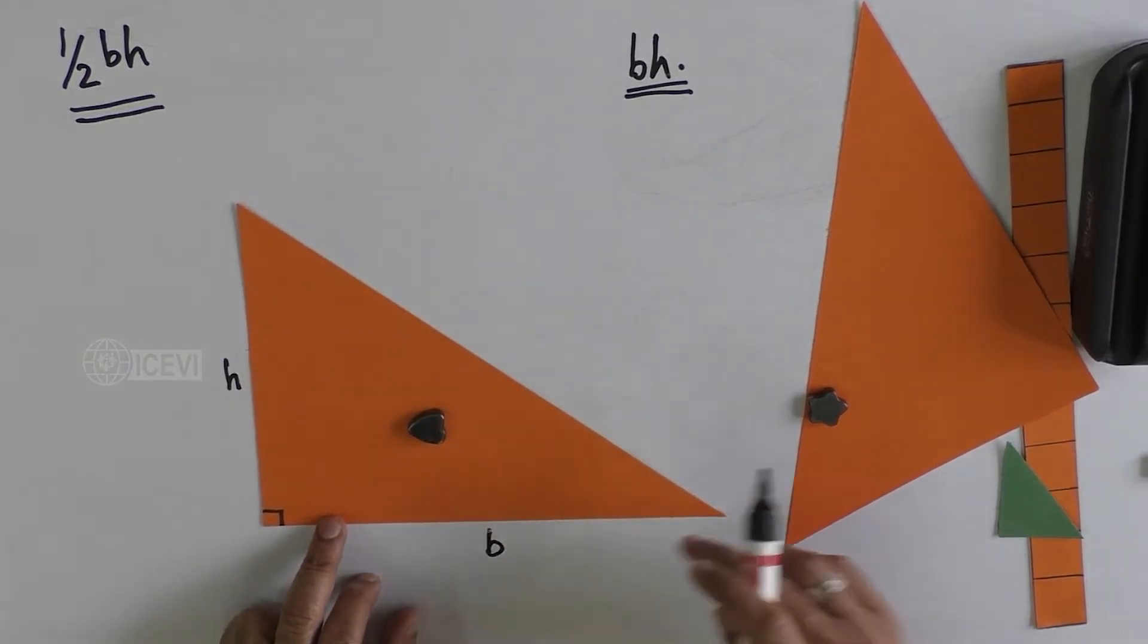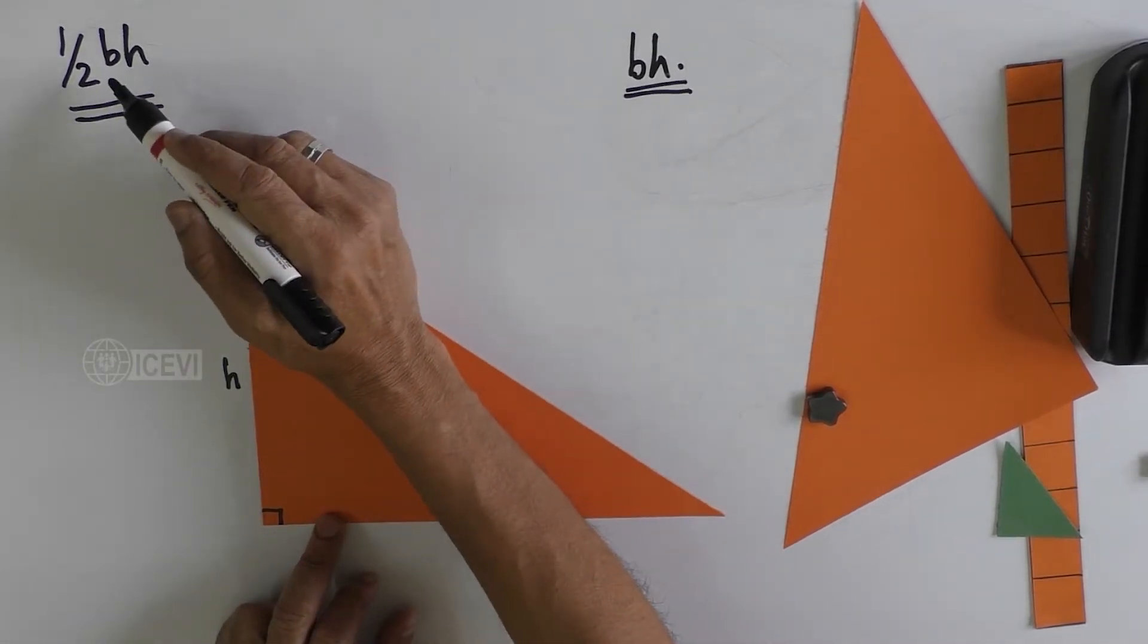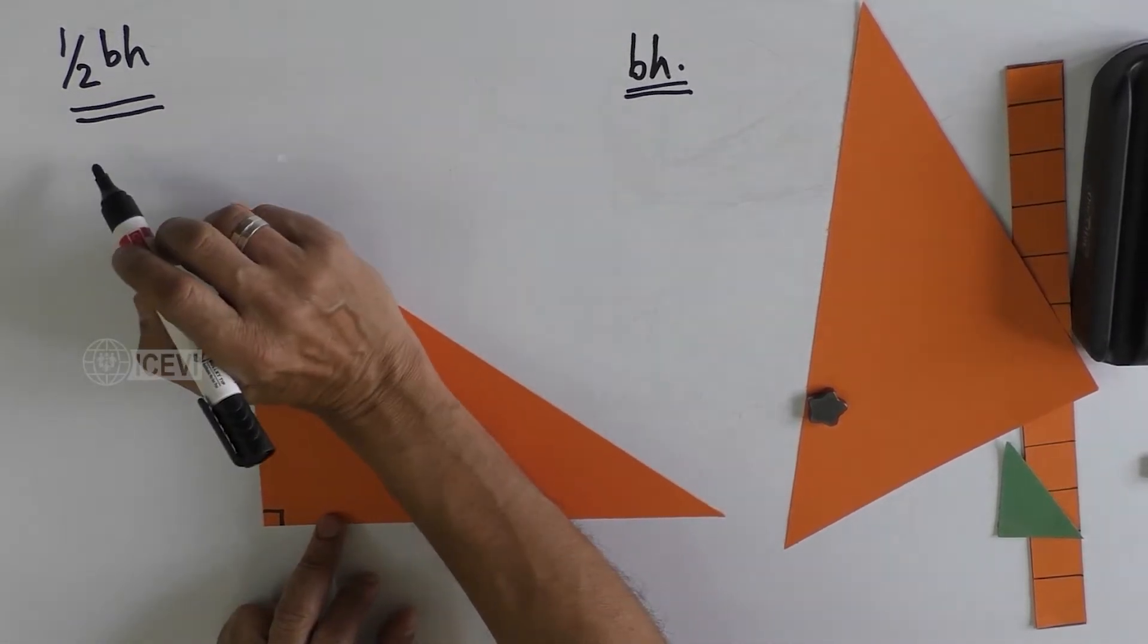The area of a right angle triangle is nothing but half BH, half BH.